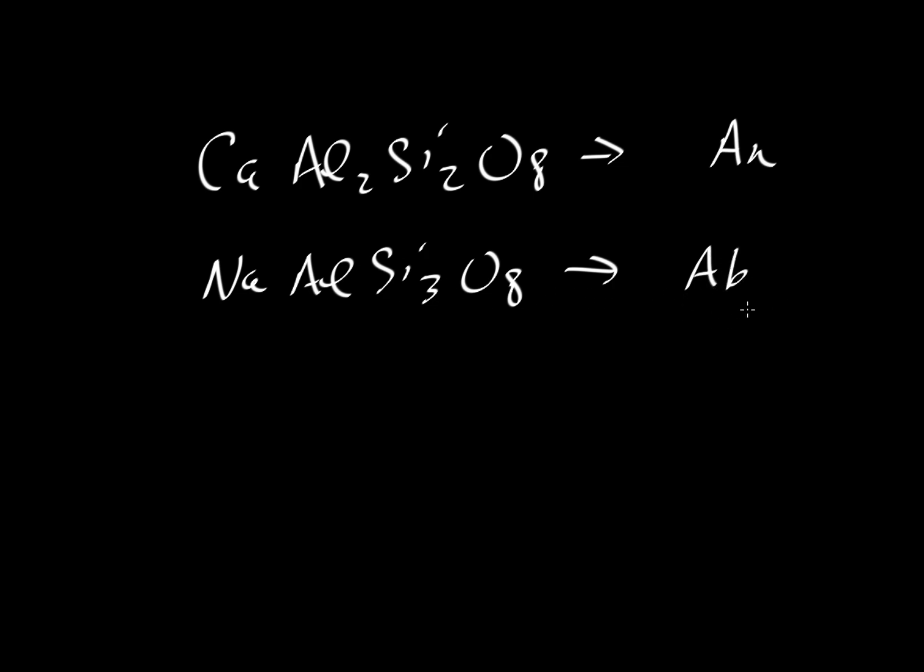We do the same thing with the feldspars. So we have CaAl2Si2O8 and in the plagioclase series that is the mineral anorthite and then we have NaAlSi3O8 which in the plagioclase series we call albite or we abbreviate it AN and AB respectively.